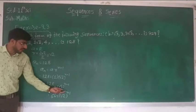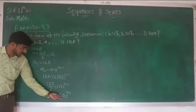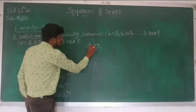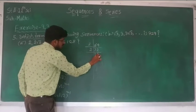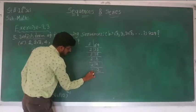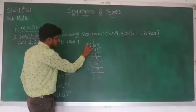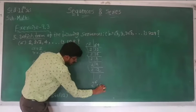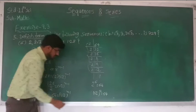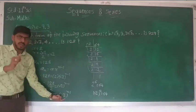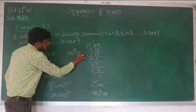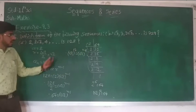Now we have to find the value of n, so we need to make the same base on both sides. Find out factors of 64: 2×32, 2×16, 2×8, 2×4, 2×2, 2×1, so 64 equals 2 raise to 6. It means √2 raise to 12 gives 64. So we can write √2 raise to 12 is equal to √2 raise to n minus 1. Now comparing powers, as the base is same.